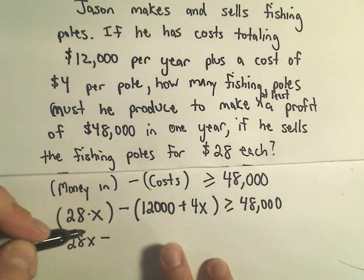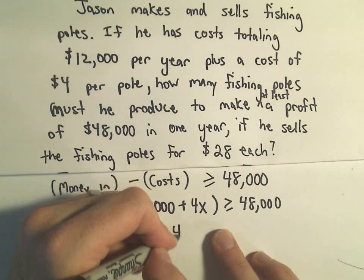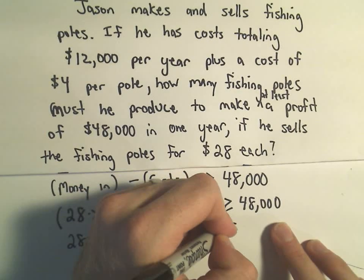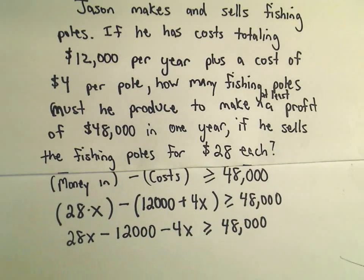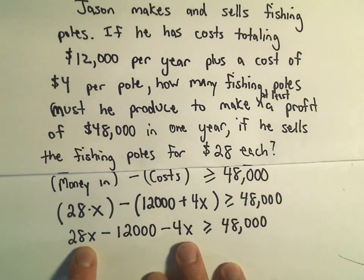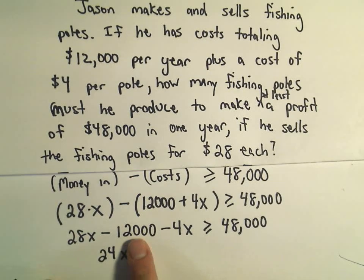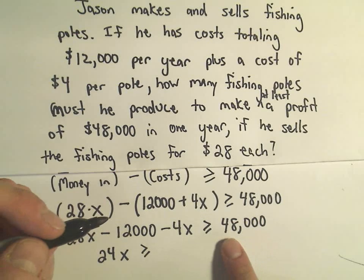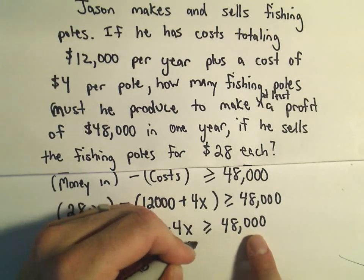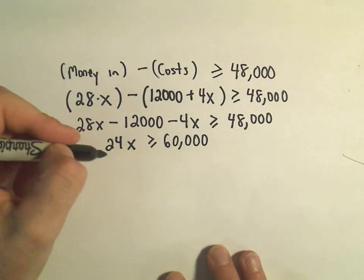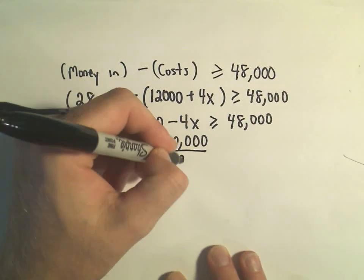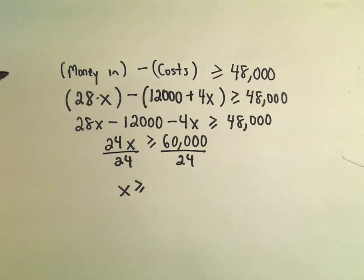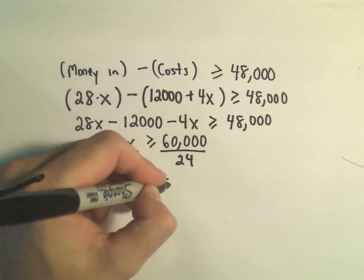So we have 28x. If we distribute the negative, we get minus 12,000 and minus 4x. That has to be greater than or equal to 48,000. Now I've got a nice linear inequality. So 28x minus 4x is 24x. I can add 12,000 to both sides, giving me 24x is greater than or equal to 48,000 plus 12,000, which is 60,000. The last thing we have to do is divide both sides by 24, and we get x is greater than or equal to 2,500.